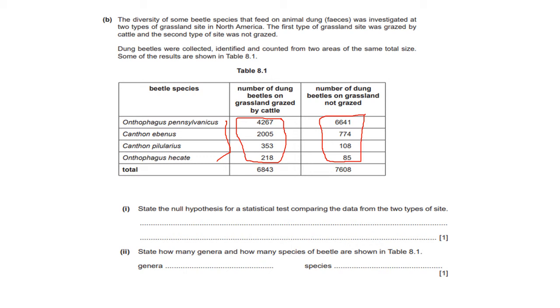Then here it says state how many genera and how many species of beetle are shown. So already this tells you beetle species and you can count that there are four of them. So the answer here is four. And for genera you just look at the first name of the species of the organisms, the first names. So here is Onthophagus, that's also Onthophagus. This is Canthon, that's Canthon. And so you know that there are two genera.